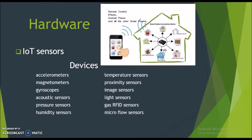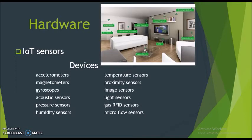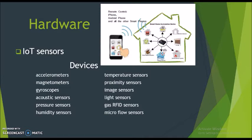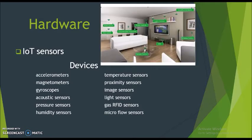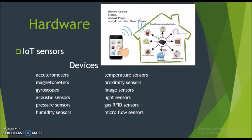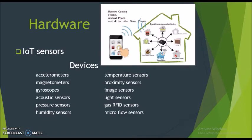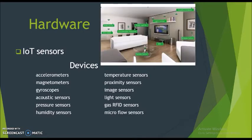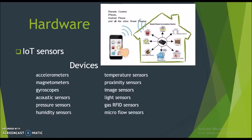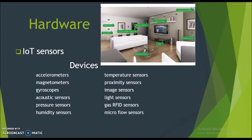Some of the measurement devices used in IoT include: accelerometer, temperature sensors, magnetometers, proximity sensors, gyroscopes, image sensors, acoustic sensors, light sensors, pressure sensors, gas/RFID sensors, humidity sensors, and micro flow sensors.